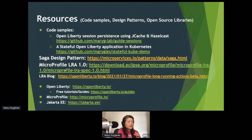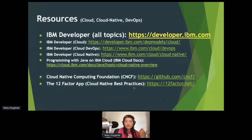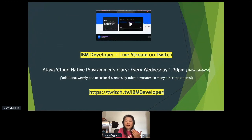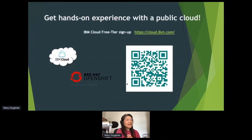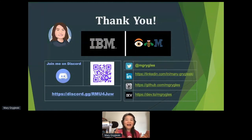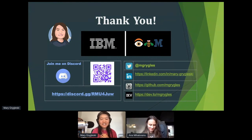Specifically, resources cover: Saga Design Pattern, MicroProfile LRA 1.0, a blog from earlier this year, links to Open Liberty, MicroProfile, and Jakarta EE, and IBM resources including Programming with Java on IBM Cloud for getting started with cloud-native Java. I also live stream on Twitch every Wednesday — today's session will cover Kafka. There's also IBM Expert TV, meetups, the Chicago Java Users Group, and a free IBM Cloud account with OpenShift support. Thank you very much — connect with me on Discord and follow me on Twitter.